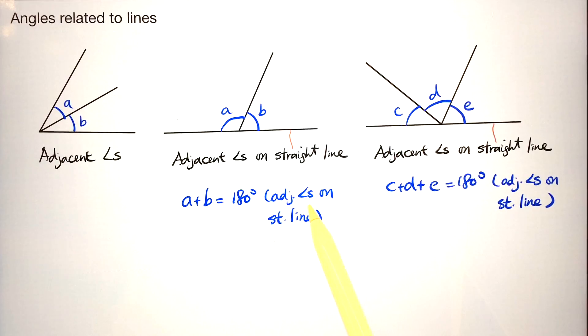We call this adjacent angles on straight line. This is the reason we have a sum of 180 degrees, because they add up to a straight angle.